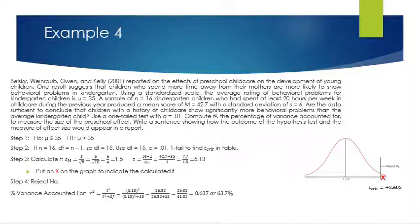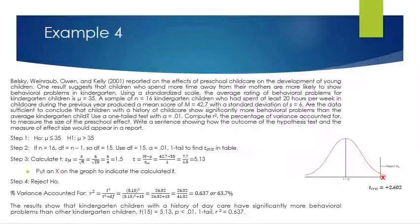Now compute r squared using t squared over (t squared plus degrees of freedom). Remember to use the calculated t, not the critical value. Do the entire denominator first before dividing. You get r squared equals 0.637 — or 63.7% of the variance is accounted for by the treatment. The results show that kindergarten children with a history of daycare have significantly more behavioral problems: t(15) equals 5.13, p less than 0.01, one tail, r squared equals 0.637.